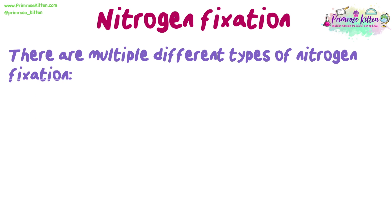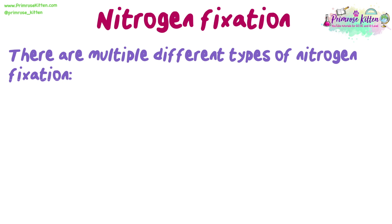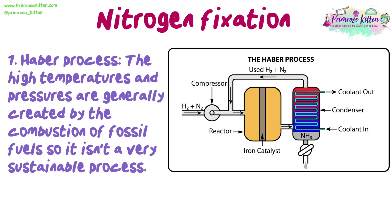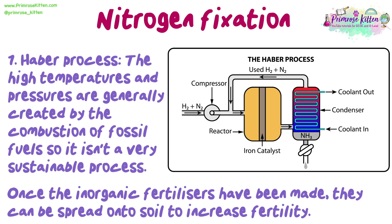There are multiple different types of nitrogen fixation. Firstly, the Haber process. This is an artificial process used to make inorganic fertilisers in agriculture. During the process, nitrogen and hydrogen are brought together at high temperatures and pressures to form ammonia. The high temperatures and pressures are generally created by the combustion of fossil fuels, so it isn't a very sustainable process. Once the inorganic fertilisers have been made, they can be spread onto soil to increase fertility.